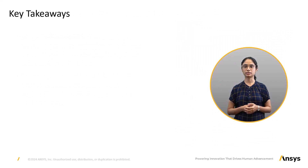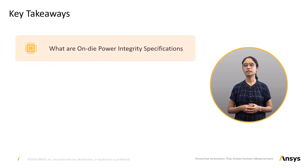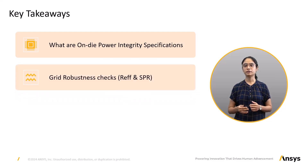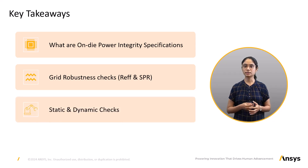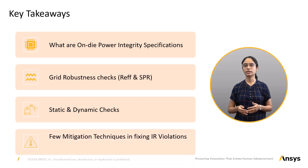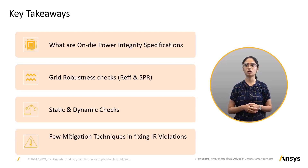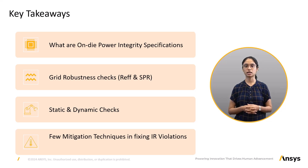We have now come to the end of this lesson. Let's summarize what we have learned. We defined on-die power integrity and discussed PDN specifications necessary for performing power integrity analysis. We explored different resistive checks including shortest resistance path checks and effective resistance checks and their significance in identifying PDN grid quality. We examined static and dynamic checks and why they are essential for ensuring PDN grid reliability and performance. We also looked at various methods to fix static and dynamic IR violations such as power gating, clock gating, adding decoupling caps and placement rearrangement. Finally, we discussed what happens when PDN specifications are not met and how to solve that post-silicon. The next module will focus on performing electro-migration and electrostatic discharge reliability checks on the PDN network. Thank you and see you in the next lesson.